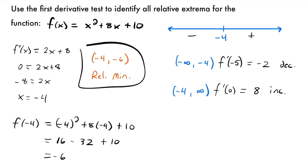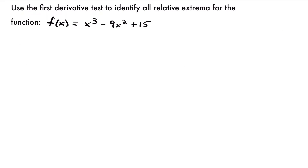Let's look at another example. We want to use the first derivative test to find any relative extrema for the function f of x equals x cubed minus 9x squared plus 15. Our first step, just like last time, is to take the derivative and then set it equal to zero.